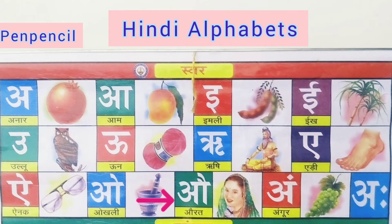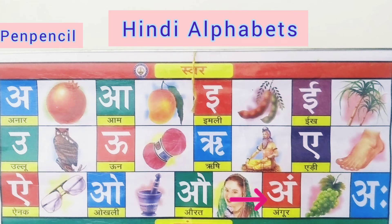Aaw say aorat — women. Aaw say aorat — women. Am say angoor — grapes. Am say angoor — grapes.